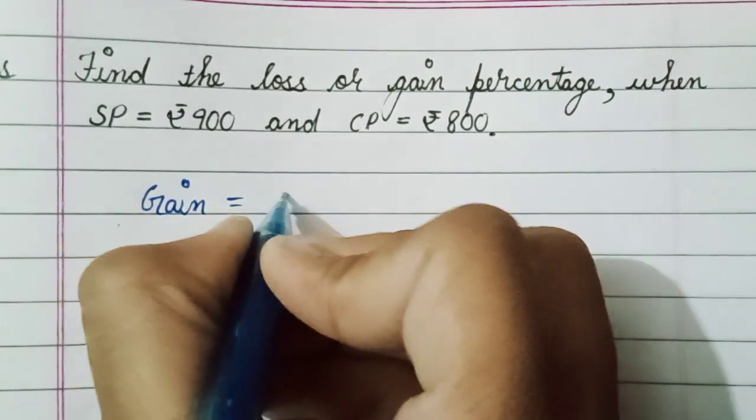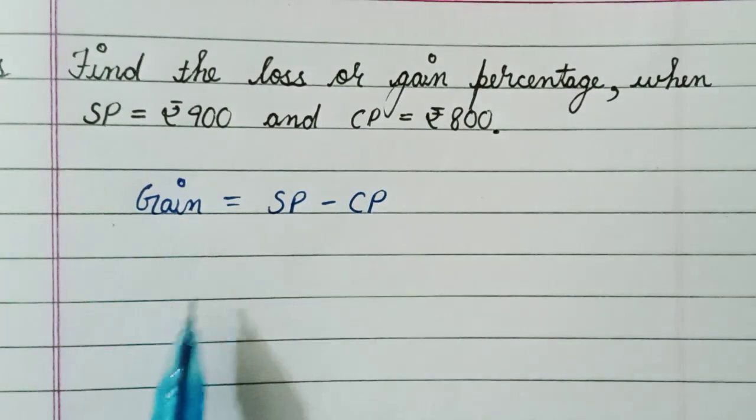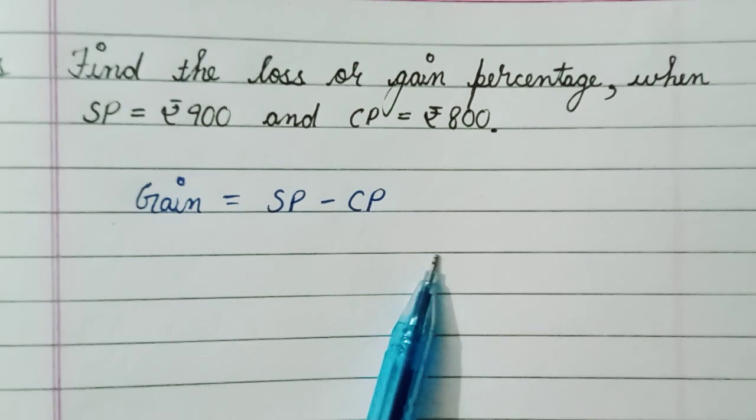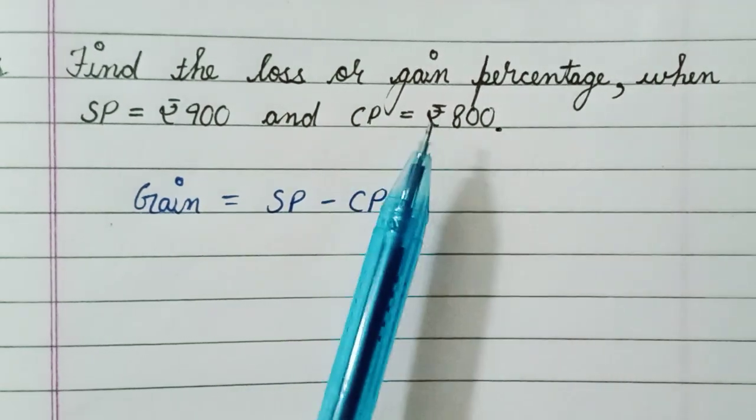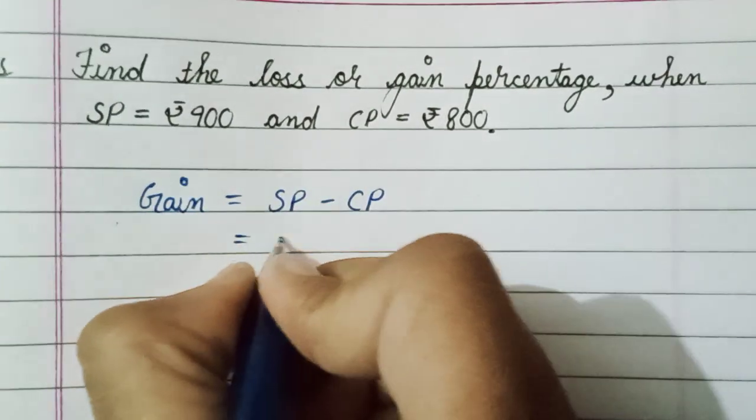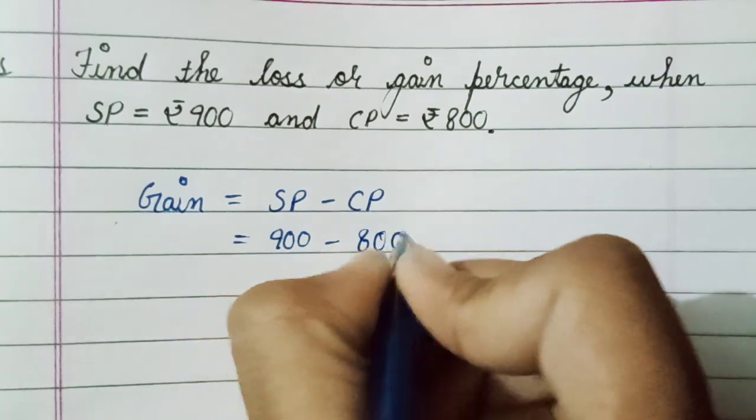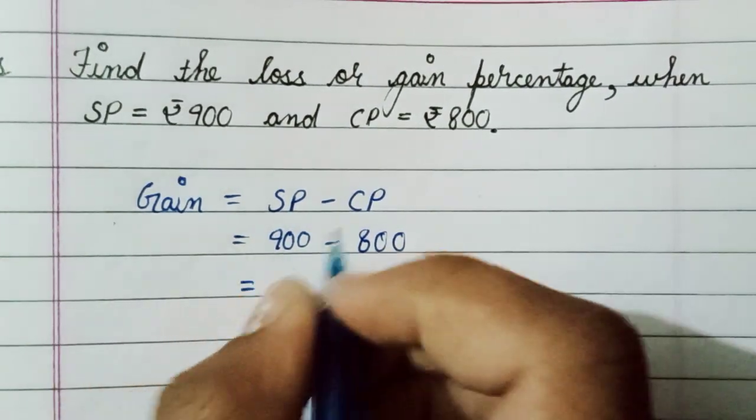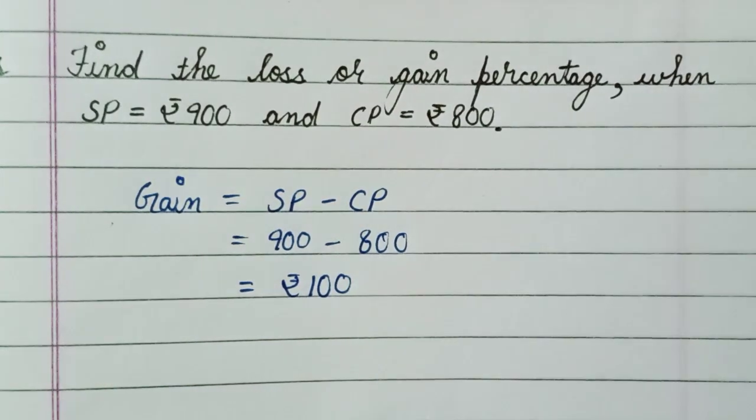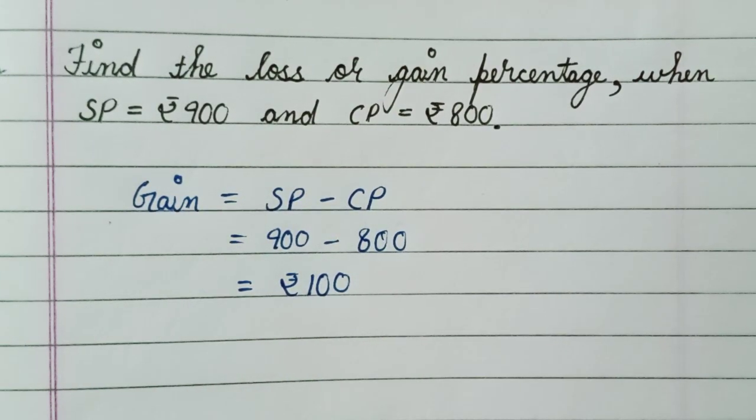We are finding gain because gain is not given in the question and we have to find the gain percent. So SP means 900 minus CP 800, which means gain equals rupee 100. Now we have to find out the gain percent.